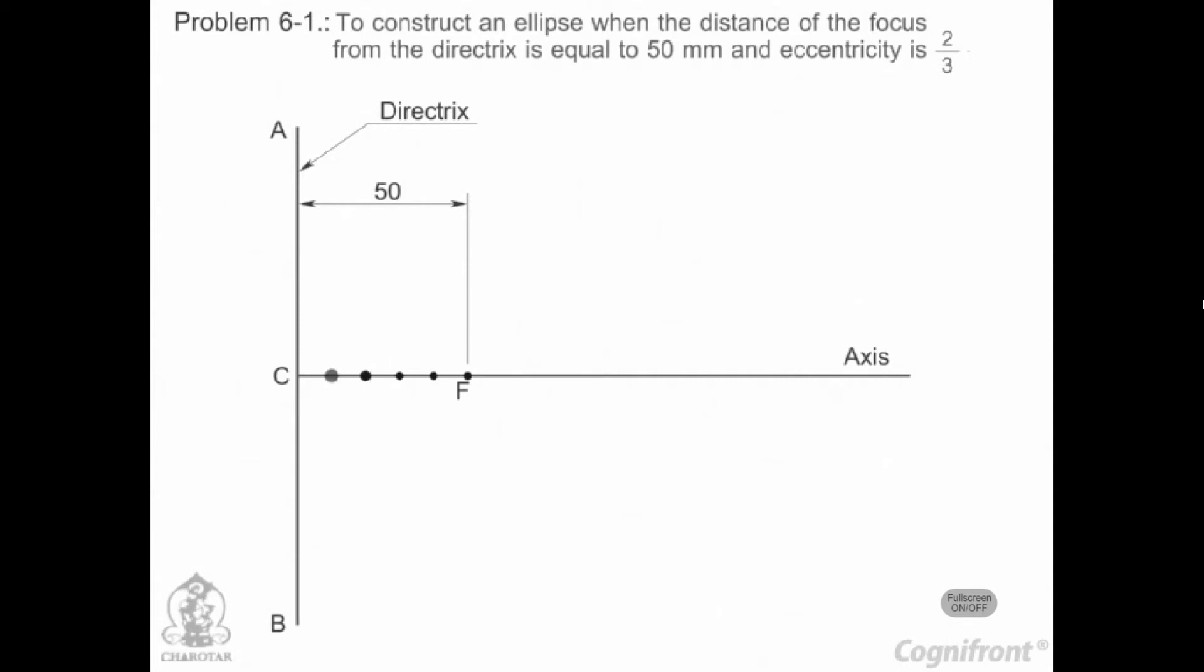Divide CF into 5 equal divisions, sum of numerator and denominator of the eccentricity. Mark the vertex V on the third division point from C. Thus, eccentricity E is equal to VF upon VC equals 2 by 3.